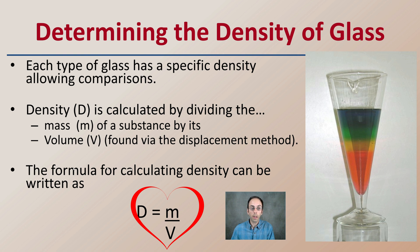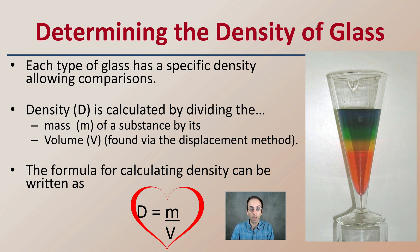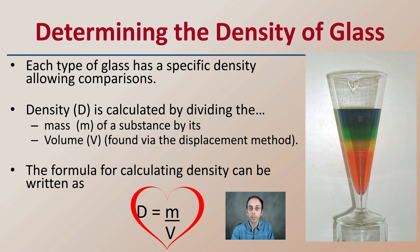We want to get the mass of the particular glass that we have, and then the volume is usually found by the displacement method, because its shape tends to be irregular. The formula for calculating density can then be applied, and you can get the density of the glass, which can help narrow down what type of glass you have found and are looking at identifying.